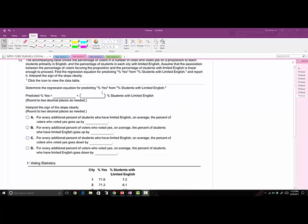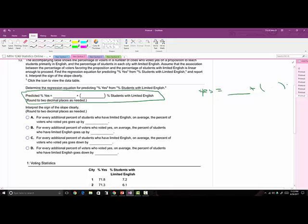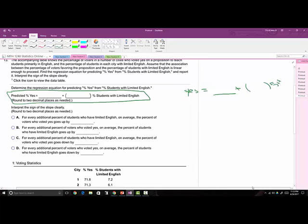I think what you guys were having the most trouble with was finding the equation. So here's the equation. Notice here we have predicted percent yes, so I have my yes equals, then we have a blank plus we have a blank here, and this is times the students with limited English.